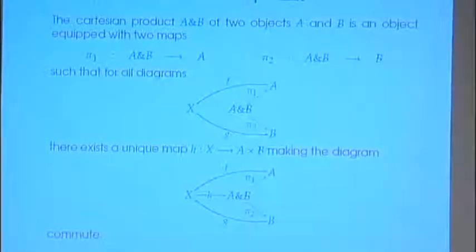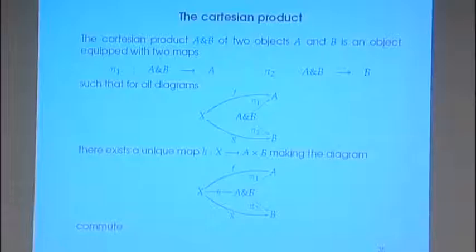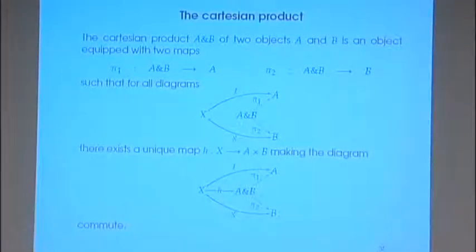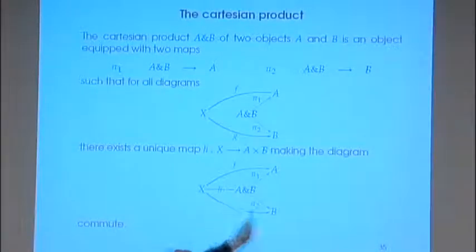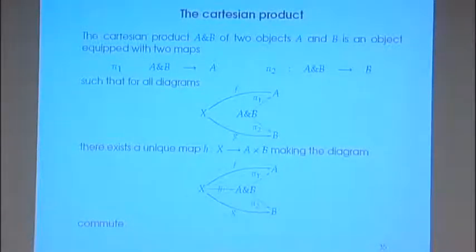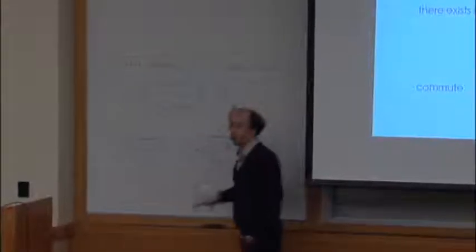This is a general definition in category theory — it's the definition of a Cartesian product. A Cartesian product is an object A with B and two maps which correspond to the projections. The property is that whenever you have a pair of maps from X to A and X to B, you can factor it uniquely as a map to A with B. This is essentially the same as saying there are just as many functions from X to A times B as functions from X to A and X to B.